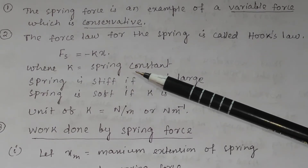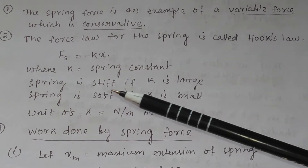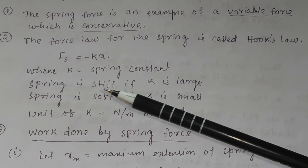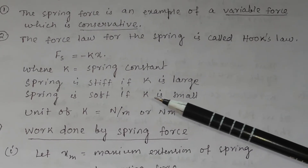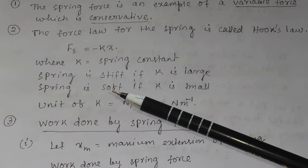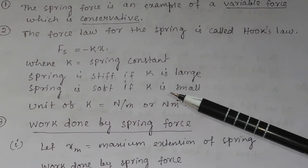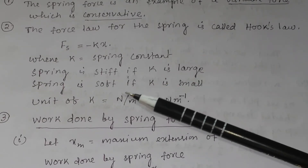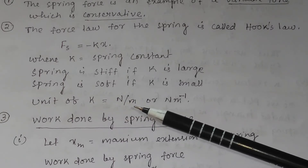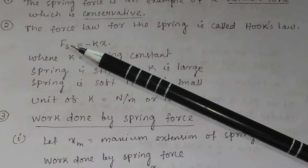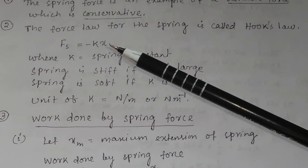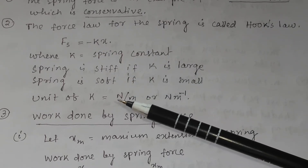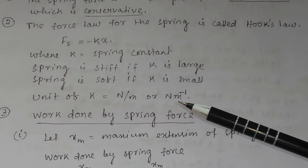Here k is called the spring constant. If the spring is stiff, then k is large; if k is small, then the spring will be soft. So for a soft spring, k is small, and for a stiff spring, k is large. The unit of the spring constant k is newton per meter (N/m), or newton meter inverse, since force is in newtons and displacement x is in meters.